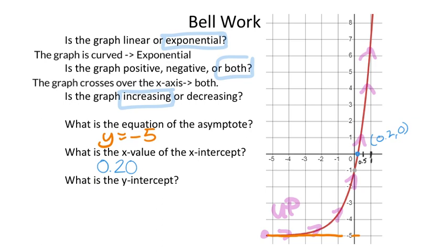What is the y-intercept? The y-intercept's x-value is always 0. Hopefully that helps you with the graph—even if you don't understand what it is, as long as you know the x-value is 0. You look at the graph where x is 0 right here.